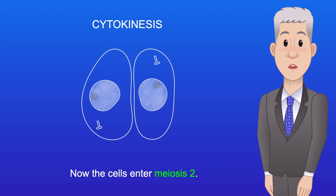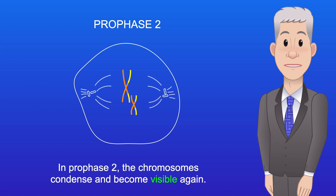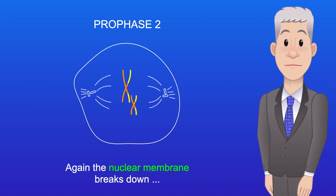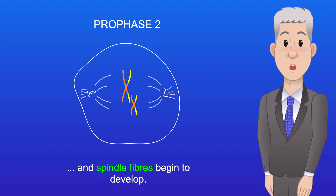Now the cells enter meiosis II. In prophase II, the chromosomes condense and become visible again. The nuclear membrane breaks down, and spindle fibres begin to develop.